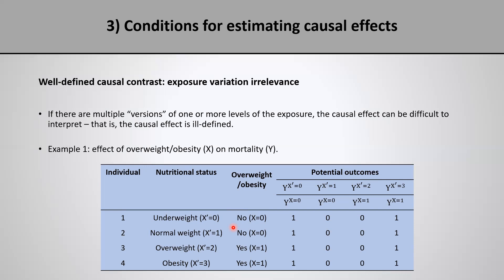Notice in this example that we have our exposure variable X and a more refined version, which I represent as X prime. Considering individuals one and two first — both are unexposed, but their actual nutritional status is different. This happens because the way I am defining being unexposed is very vague and compatible with very different things. After all, being underweight is very different from being normal weight. Similarly, the exposed group is also defined broadly, containing individuals who are overweight and individuals who are obese, even though those two things are very different.